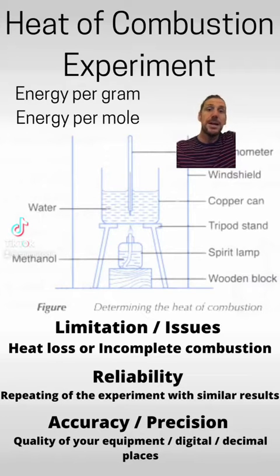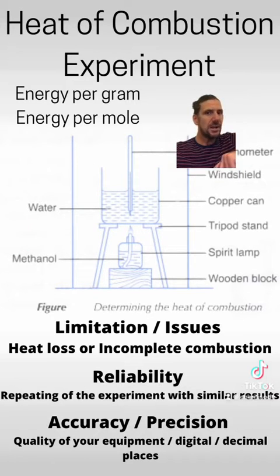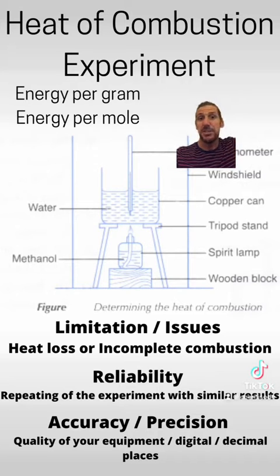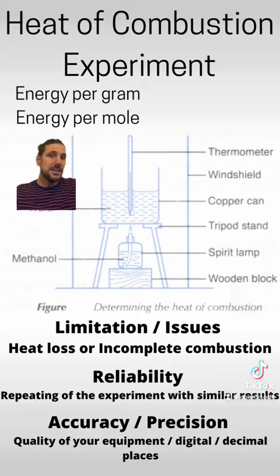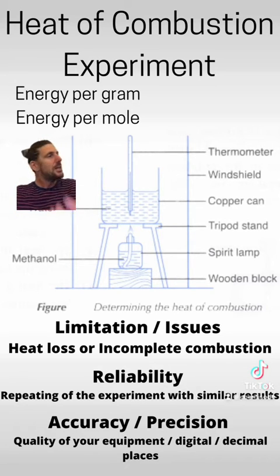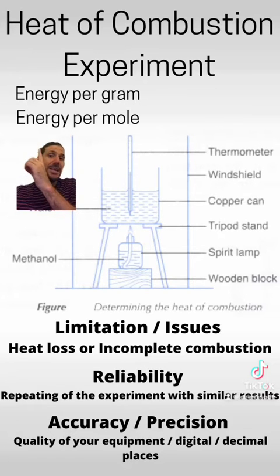Here is a quick video about an experiment you're very likely to do in year 12 chemistry — to determine the heat of combustion of a fuel, or anything that burns. The heat of combustion is what energy content is sometimes called. It's defined as the energy release per gram or energy release per mole of a fuel. The apparatus I've got sitting over here is one you're likely to use when calculating this value for different fuels in year 12 chemistry.